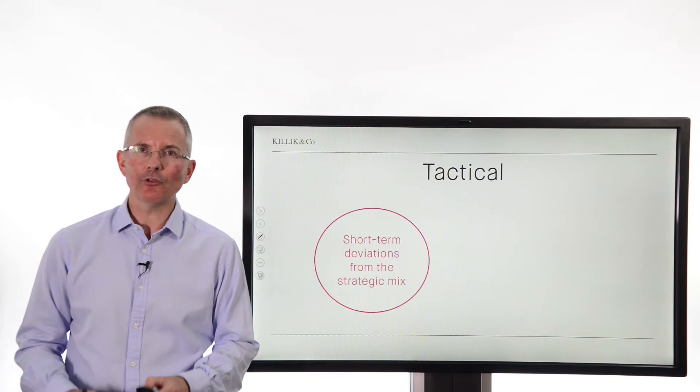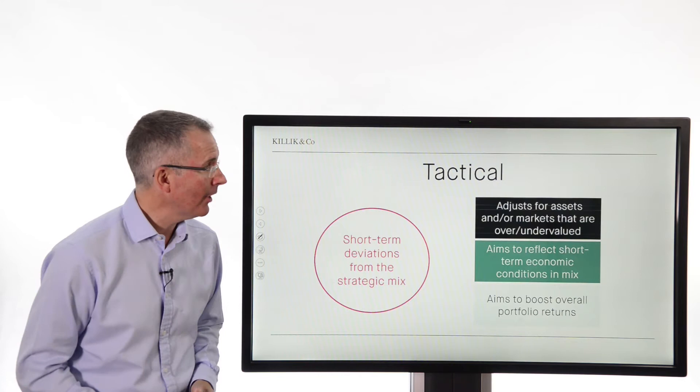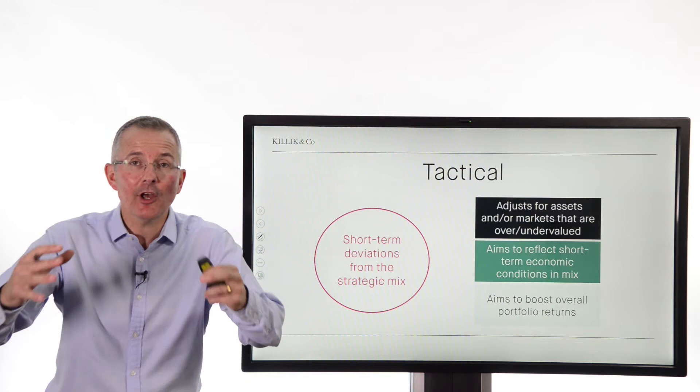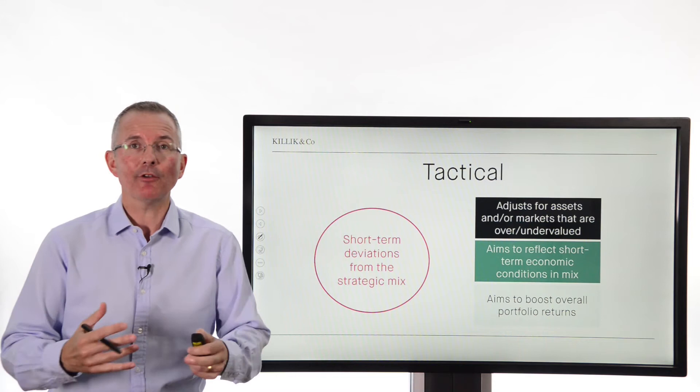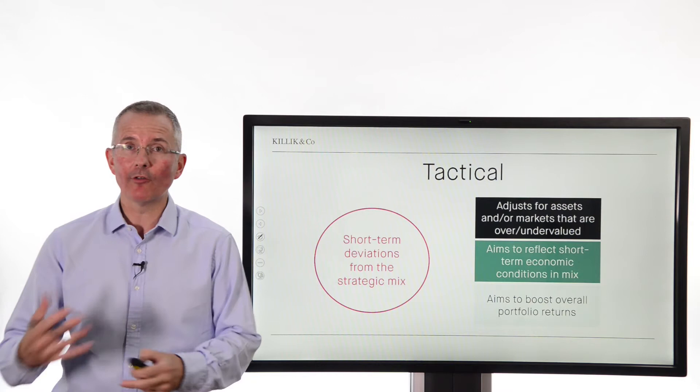Tactical allocation means: I've got my strategic mix in mind, but I could make deviations on a short-term basis. This aims to boost overall portfolio returns by recognizing that at certain points in the cycle, some asset classes are more attractive than others, and it adjusts the mix accordingly over the short term. Essentially, you can identify turning points where sometimes bonds are expected to rise against shares and vice versa. Typically, in a bad bear market, bonds do well and shares do badly; in a bull market, the reverse is true. So you can adjust for markets that are over- or undervalued accordingly.